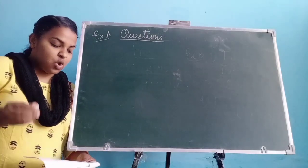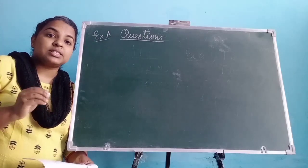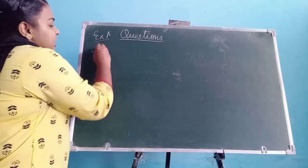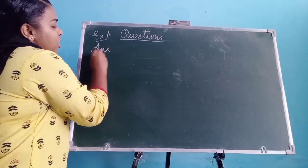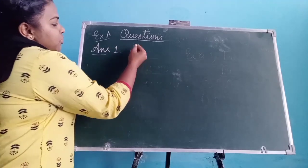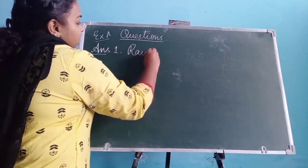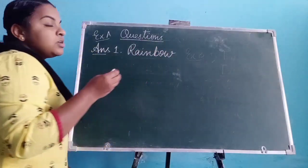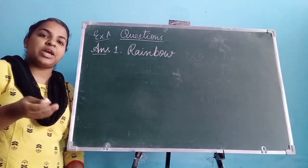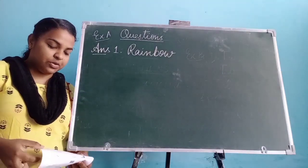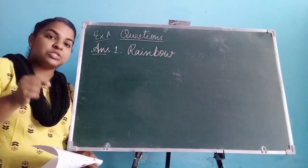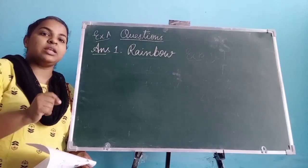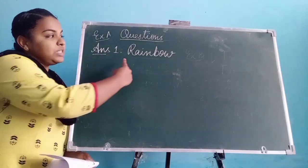First question: what was there in the sky? In the sky there was a rainbow. You have to write the answer as 'rainbow.' This is a comprehension type of question, so you can write a full sentence — 'There was a rainbow in the sky' — or you can write a single word: rainbow.